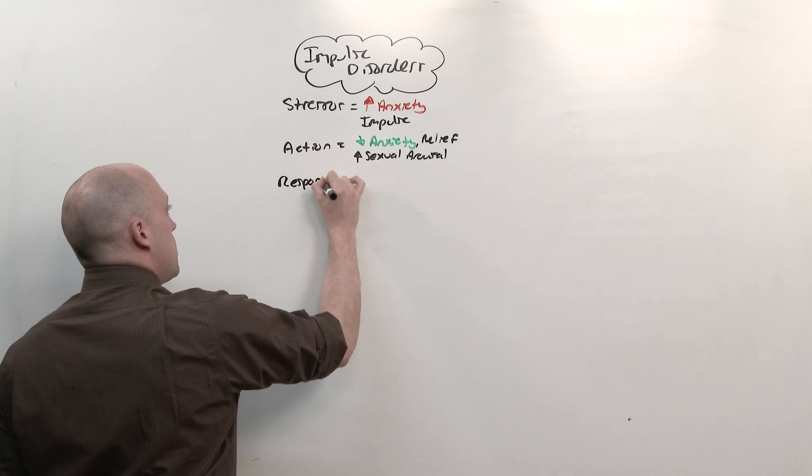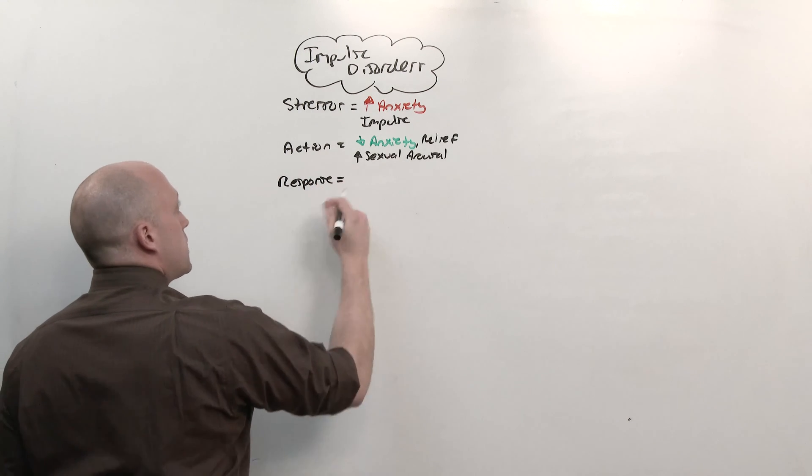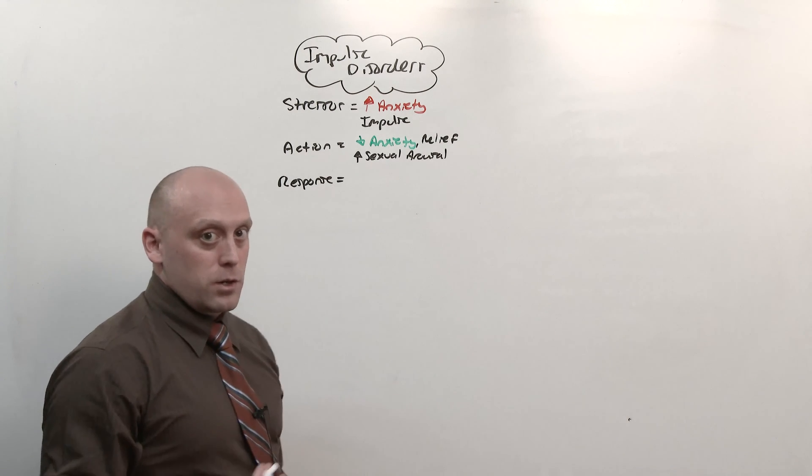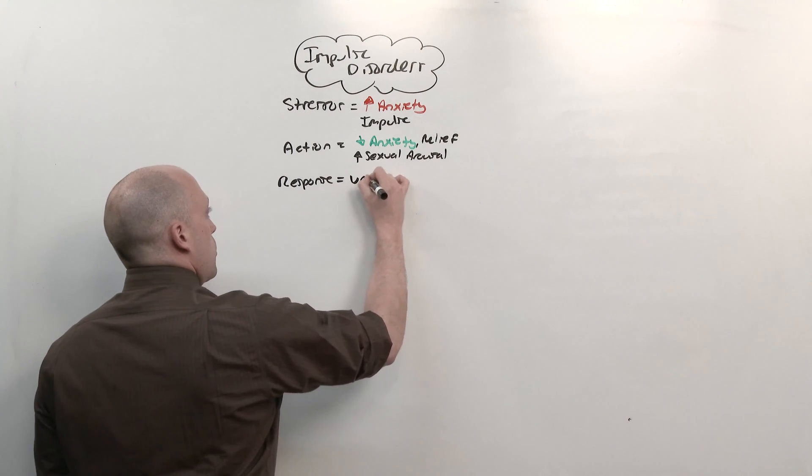You're going to see how each of these disorders are going to play on that response, and that's exactly it. But after the action is committed, how the person feels is important to implementing whether this is the psychiatric disorder, or just someone committing a crime. This is going to be variable based on the disease.